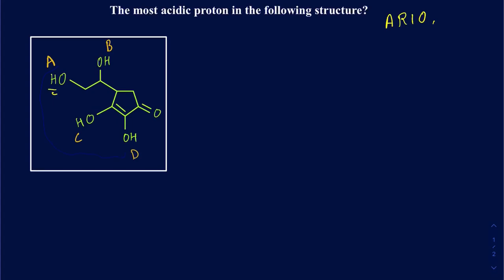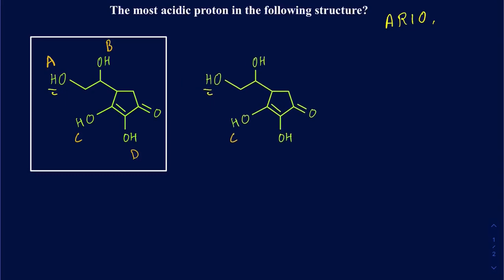So let's focus on A. When I go ahead and get rid of proton A and draw the conjugate base, it would be just a negative charge on this oxygen here. So that's after losing proton A — I'll call this structure A. And then I want to do the same thing for B, C, and D.